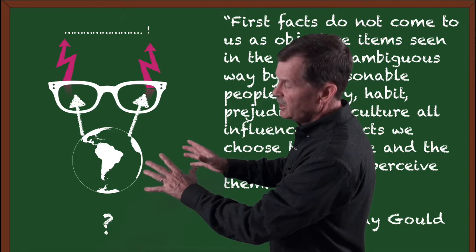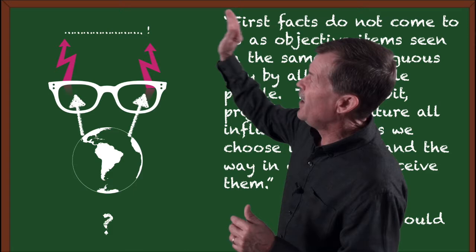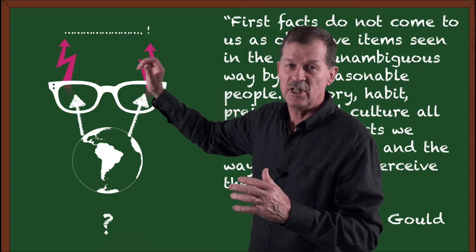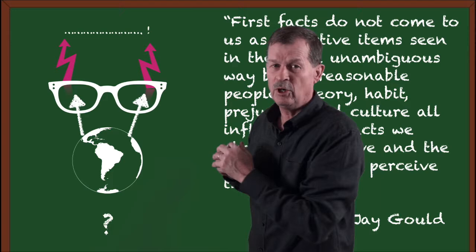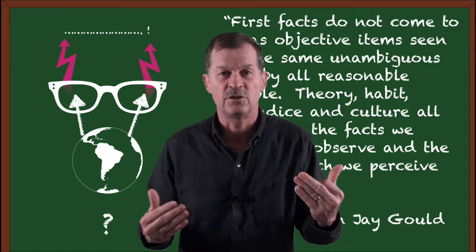We invite in an expert and they study the object. Through their studies, they come to a conclusion of what that means. That would be the facts being published. Now the facts being published are really the result of these glasses that have been studying. The result or the arrows going up are colored because that represents the facts are colored by the lenses of this person. What colors those lenses? Theory, habit, prejudice, and culture mentioned by Stephen Jay Gould.